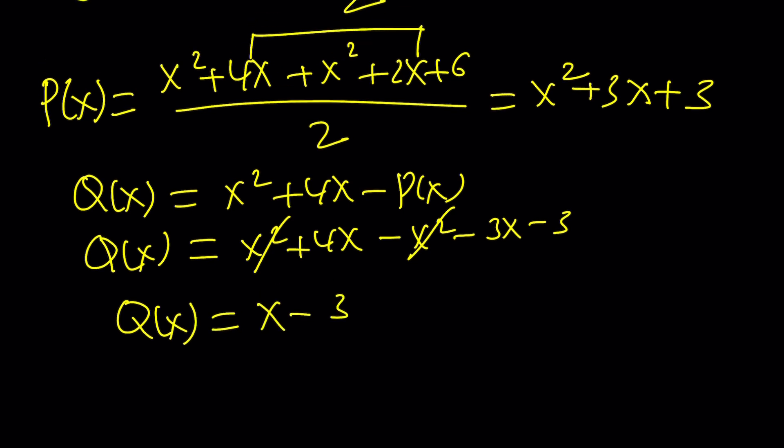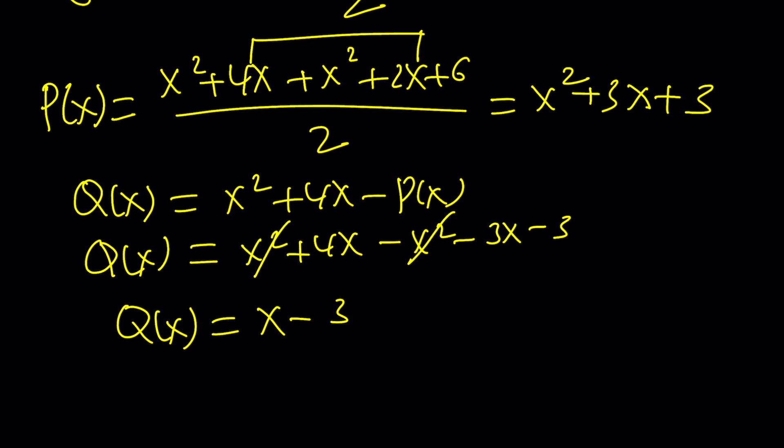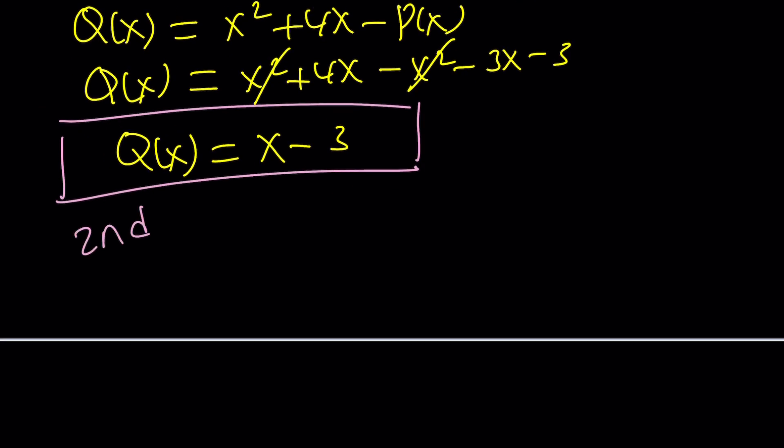So this is P(x), and this is Q(x). And of course, because they are interchangeable, P(x) and Q(x) can be switched around. Either way is fine. And that's the first method. Let's talk about the second method.